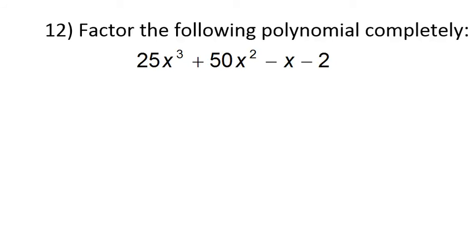In this video, we will review how to factor a polynomial by grouping. Now, it doesn't tell us that we need to factor by grouping, but we have four terms, and 50 divided by 25 is 2. And here we have negative 2 divided by negative 1, which is also 2. So grouping is going to work.